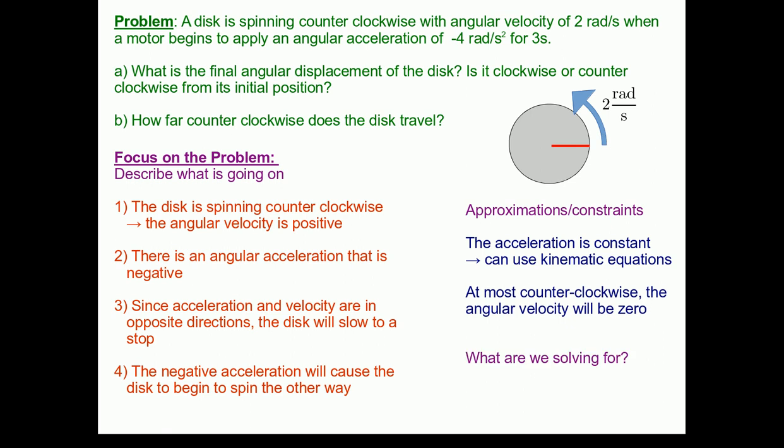Now, we can move on to trying to identify what we're solving for. Well, in part A, we're looking for the final angular displacement of the disc. Or, what is the final angle of the disc after three seconds of time have elapsed? For part B, we're interested in how far counter-clockwise does the disc travel. Or, using our approximations and constraints, we know that this is the angle at which the omega, the angular velocity, is equal to zero.